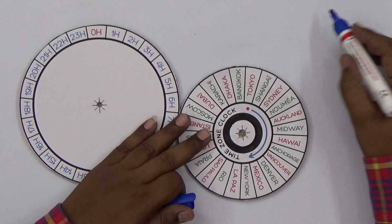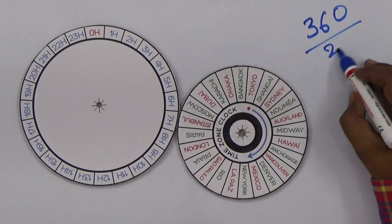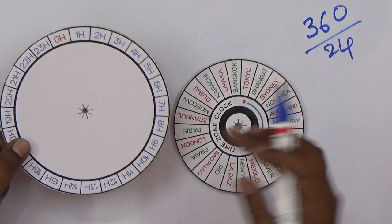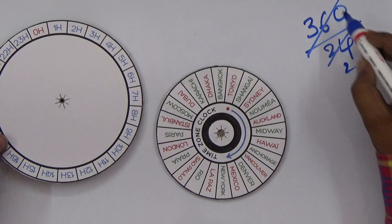You can simplify this calculation: 12 times 2 is 24, 12 times 3 is 36, so 360 divided by 24 equals 15. We need 15 degrees for each part.